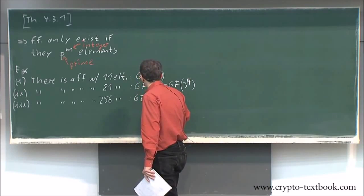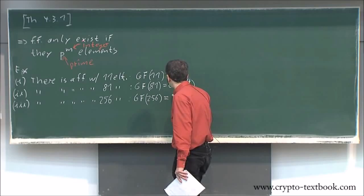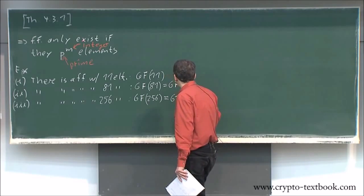There is a finite field with 256 elements, which is denoted as GF(256), or, and that's the notation that we prefer in this course here, GF(2 to the 8).